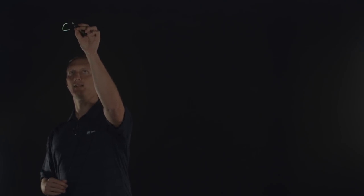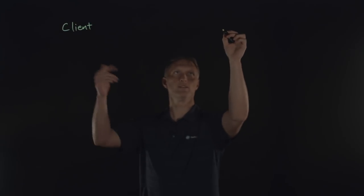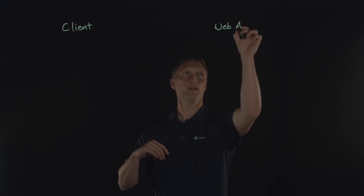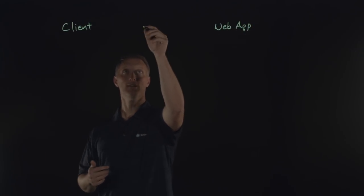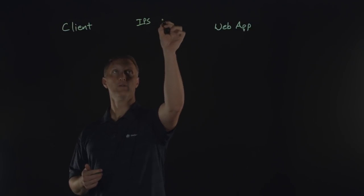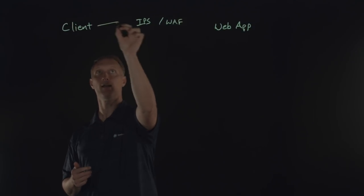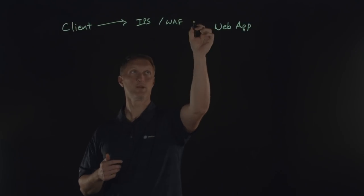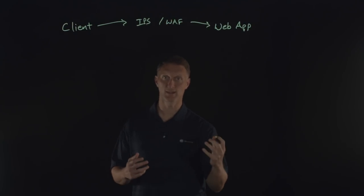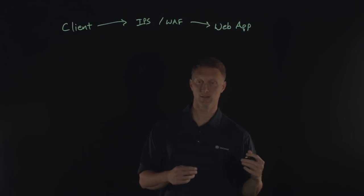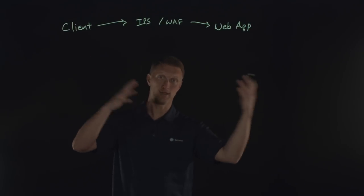You have a client who wants to access your web application — client over here, web app over here — and then you put the security solution in the middle. Maybe this is an IPS or maybe this is a web application firewall. As a client requests your application, it's going to come through one of these security products, which is going to check it before it allows access to your web application. So the question is: what's the difference between the IPS and the WAF?